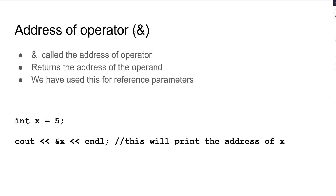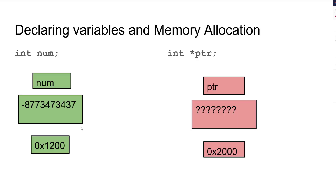We must also know what the address-of operator is. The ampersand sign is called the address-of operator — it returns the address of the operand. You have used this for reference parameters. When you pass by reference, you put an ampersand sign in front of it. So if you do int x = 5, a regular integer, then cout << &x will print the address of x. You should try this — the more you try these kinds of things, the more you'll figure out what your program does.